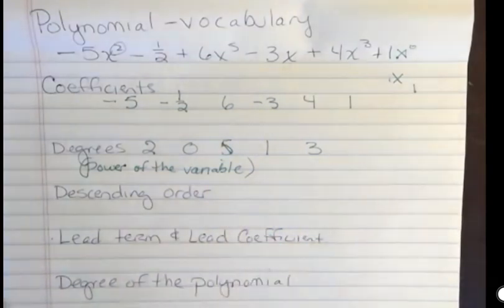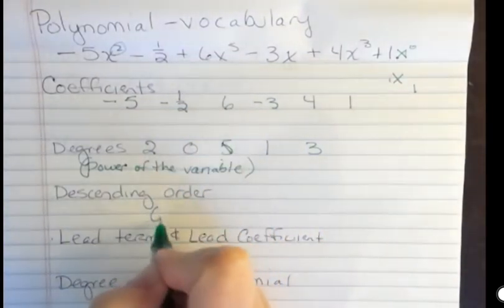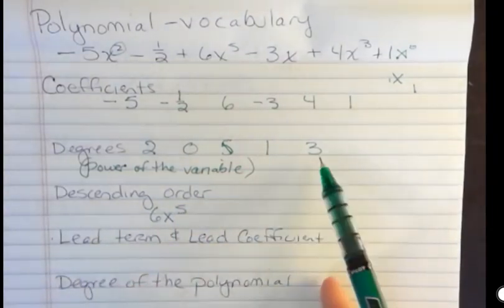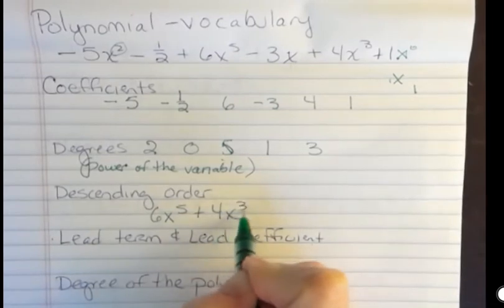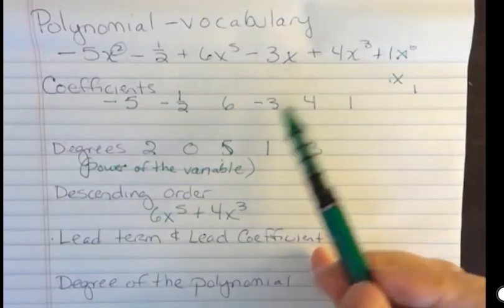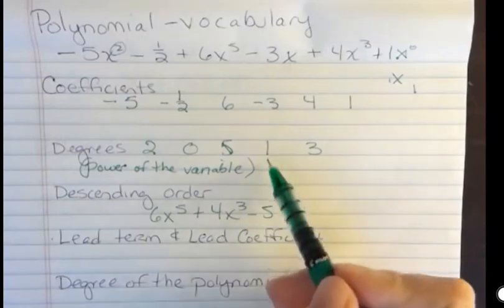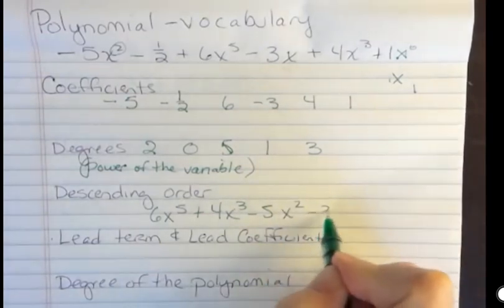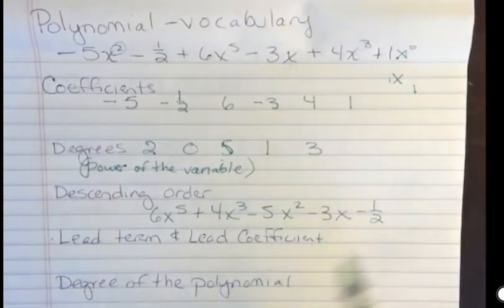Descending order means from the highest power to the lowest power. Our highest power is this term, 6x to the 5th. Next highest was 3, plus 4x to the 3rd. Notice when I write in descending order, I include the signs in between. The next highest was 2, negative 5x to the 2nd. Then 1, negative 3x, and then 0, which was negative 1 half. So now this is written in descending order, highest degree down to the lowest degree.